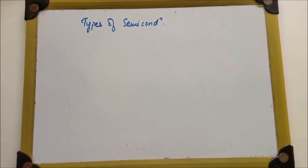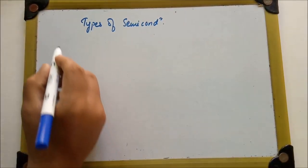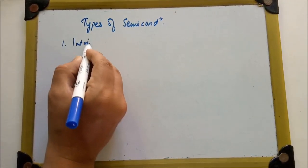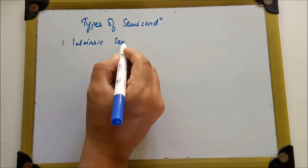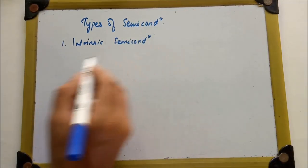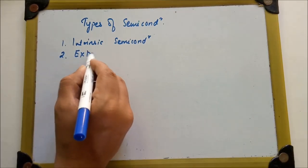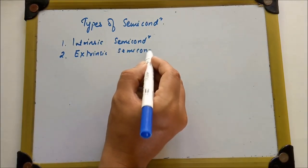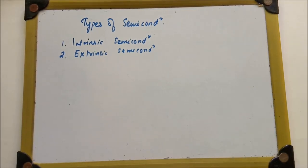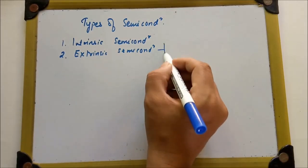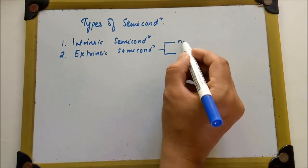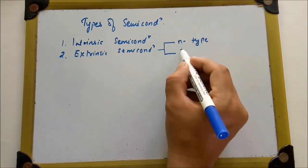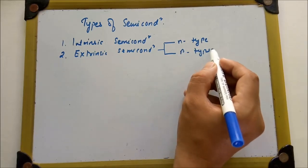Today we will see the types of semiconductors. Semiconductors are classified into two types: first is intrinsic semiconductor, and second is extrinsic semiconductor. In extrinsic semiconductor, it is further classified as n-type semiconductor and p-type semiconductor.